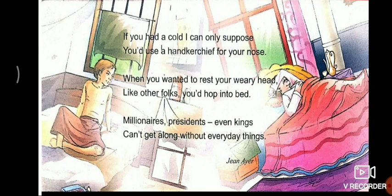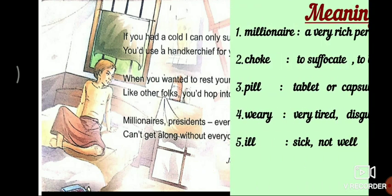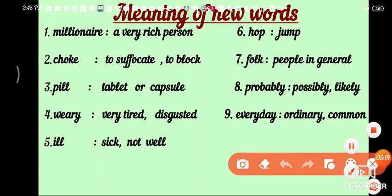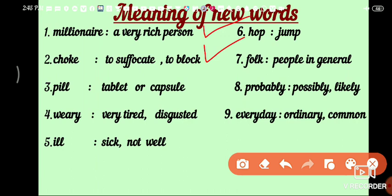Wow, what a nice poem. So you should also recite this poem. Let's find new words and learn some meanings. First: millionaire — millionaire means a very rich person. Second: choke — choke means to suffocate or to block. Third: pill — pill means tablet or capsule. Fourth: weary — weary means very tired or disgusted.